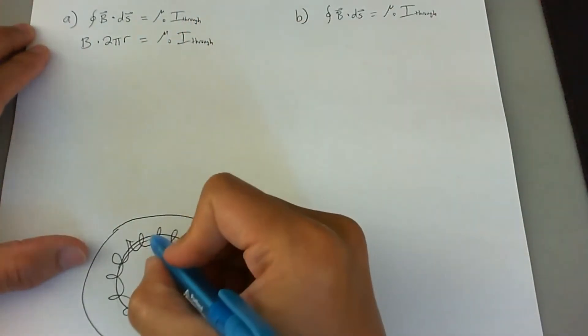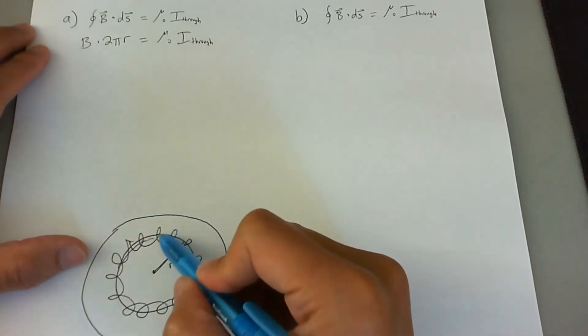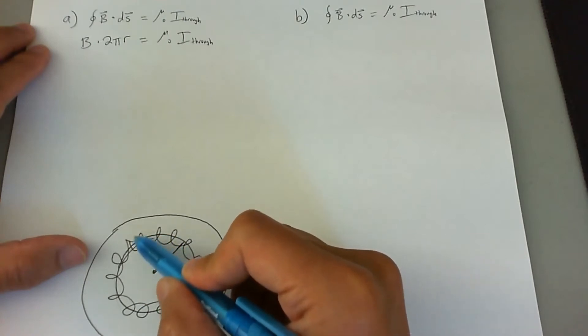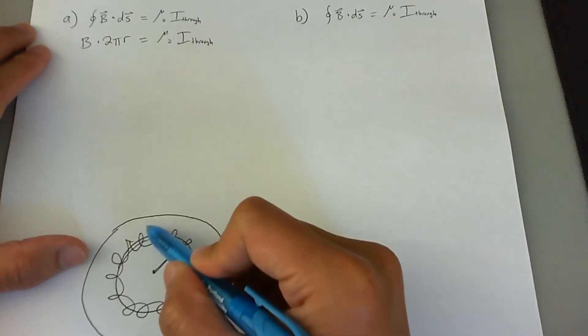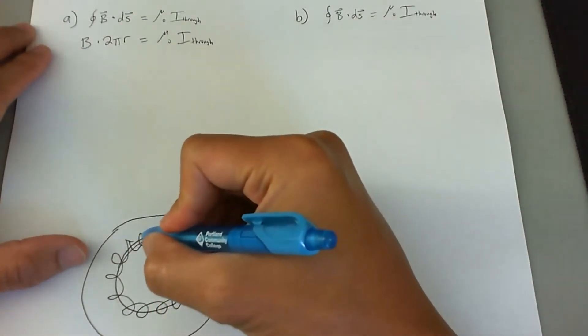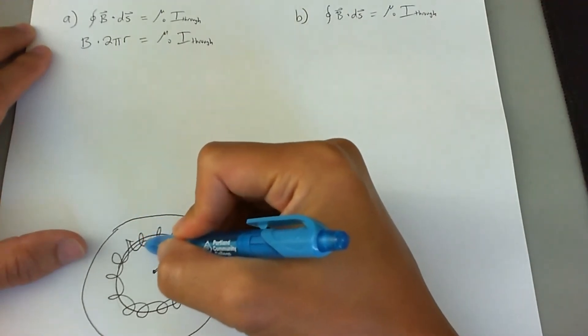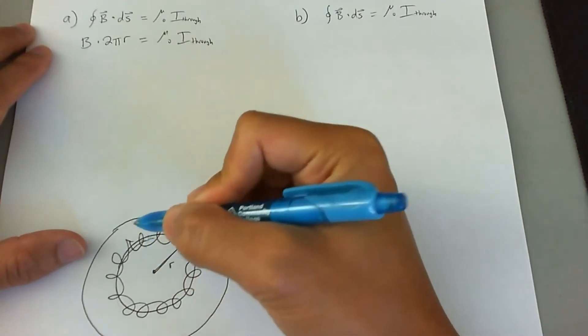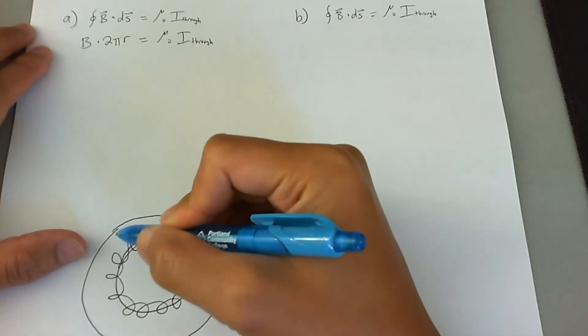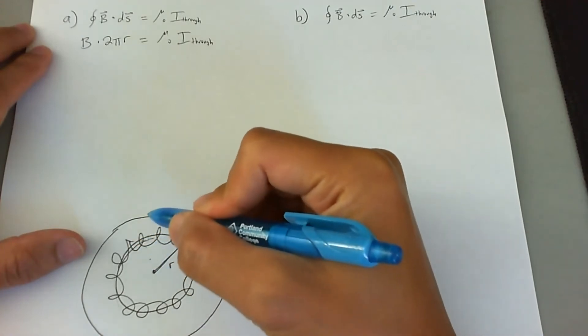Now, the thing is, when you're in this amperian loop and you have half of the solenoid loops going inside this amperian loop and half going outside the amperian loop, you'll see that the loop in the problem at least always goes down as it's inside the loop and comes up outside the paper when you're outside the loop.